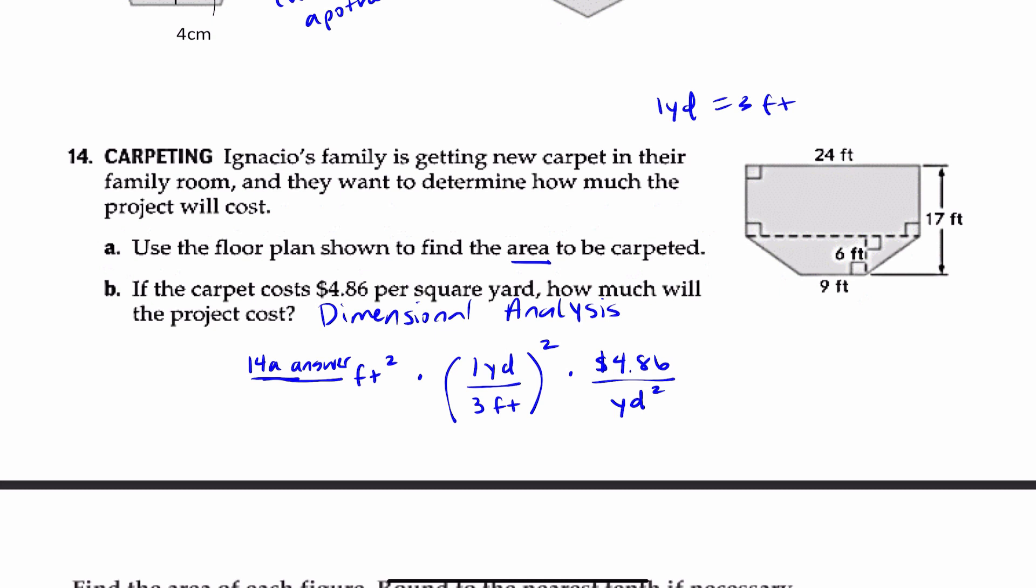You see a rectangle, and then you see a trapezoid. Once you find the area of the rectangle and the area of the trapezoid, add the two areas together so that you have the answer for 14A. You've got to show your work.